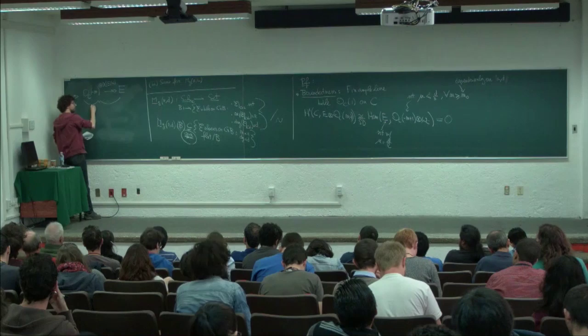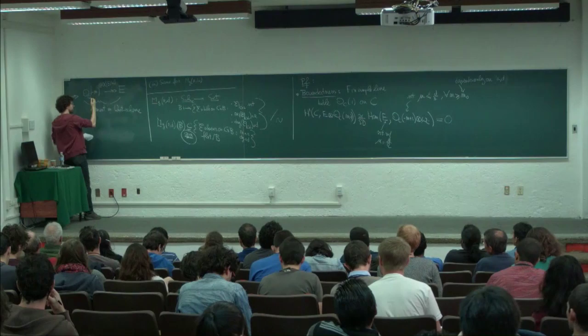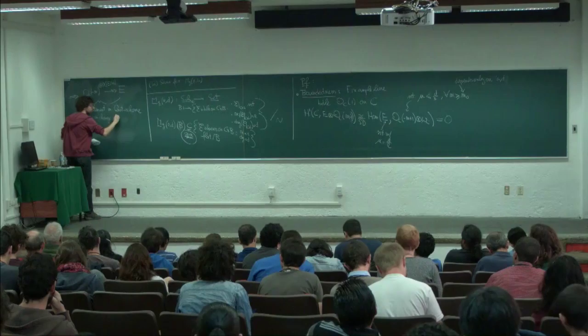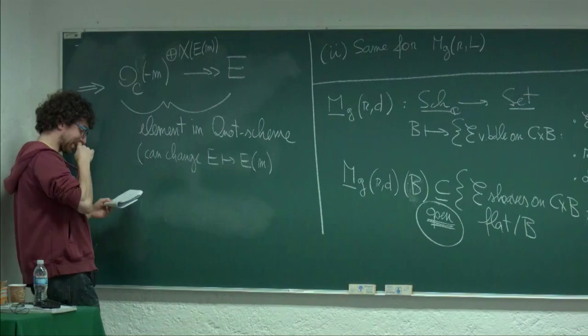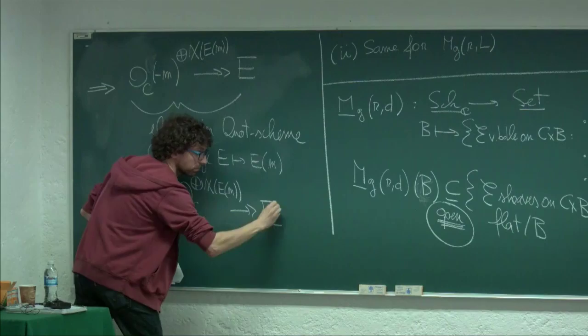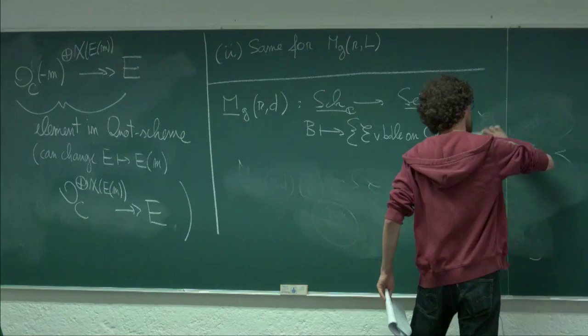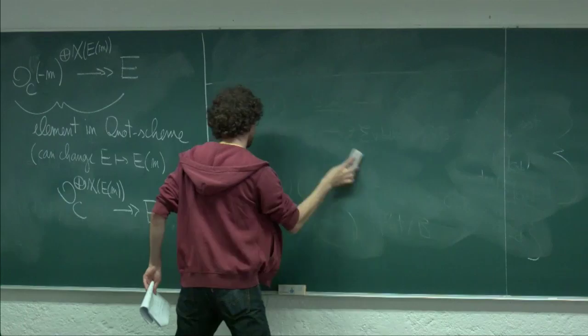I think about this as an element in a fixed quot scheme. This quot scheme has M, and I can change uniformly E with E(M). What I get is something which is a quotient of N copies of the structure sheaf into E. So we have embedded our object into a certain quot scheme.